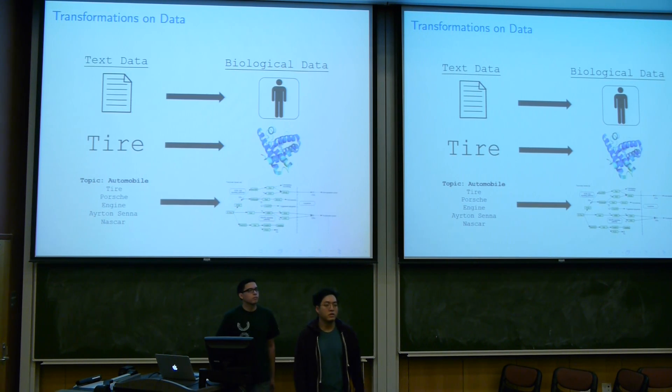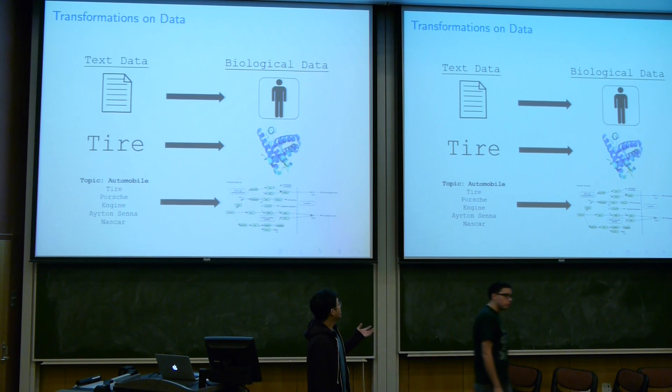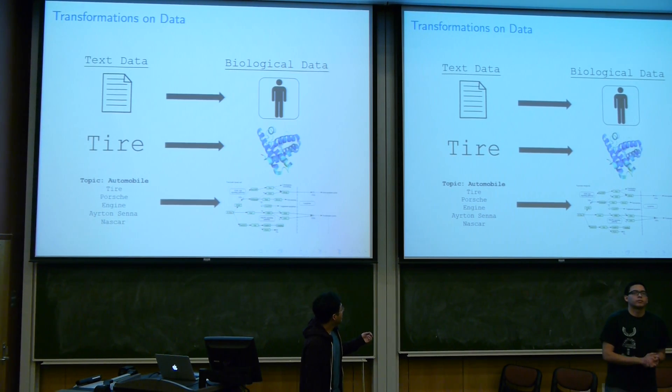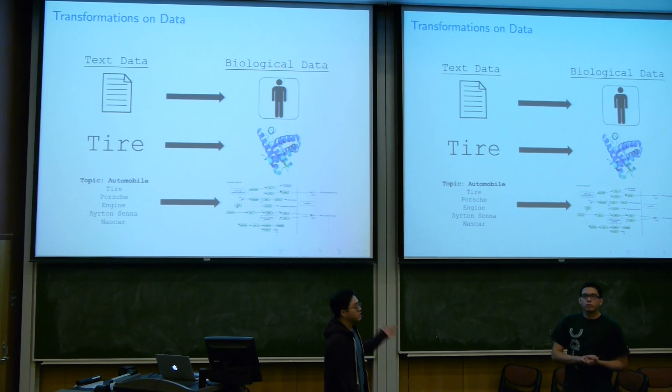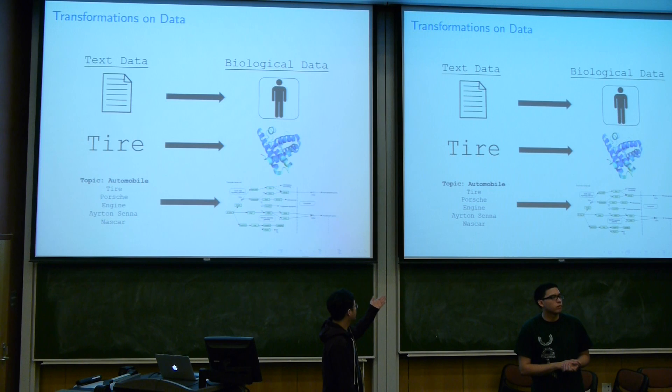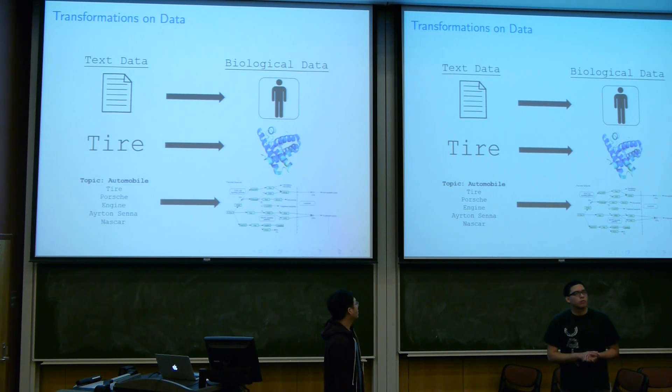LDA originally used text data. Given a document, there's a word inside the document. The topic, for example, should take words that are related to car content like tire, car brand, engine, or the famous Formula One driver.